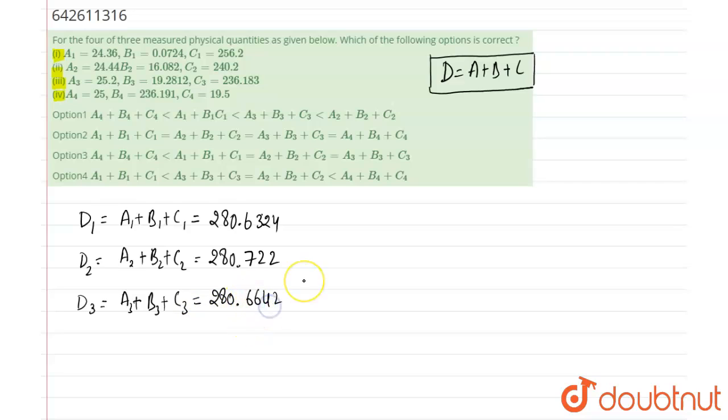And D4 means sum of a4 plus b4 plus c4 is equal to 280.691. That is the actual sum of all three quantities. Now we have to use the significant figures.